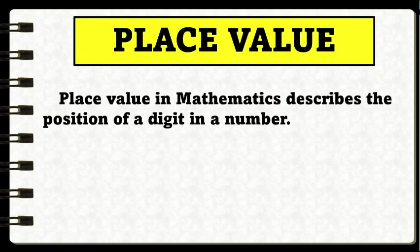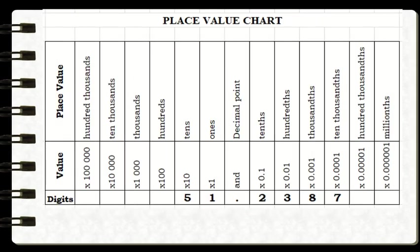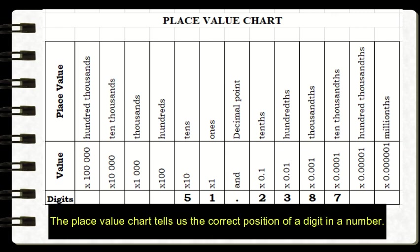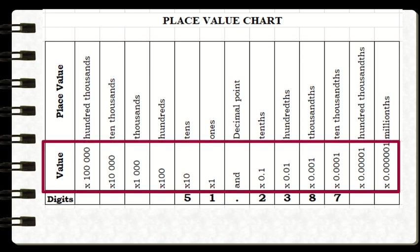Place value in mathematics describes the position of a digit in a number. For example, let us identify the position of a digit in the number 51 and two thousand three hundred eighty-seven ten-thousandths. It will be very easy for us to determine the place value of a digit if we use the place value chart. Let's discuss its different parts.